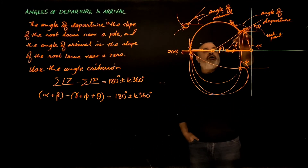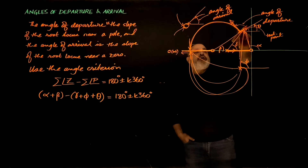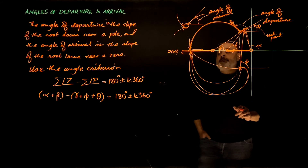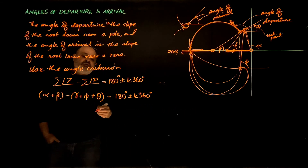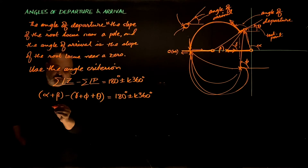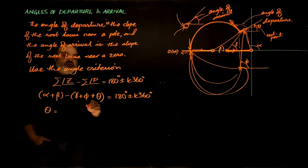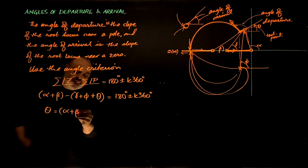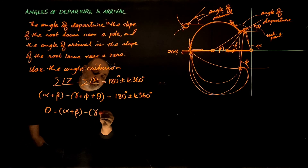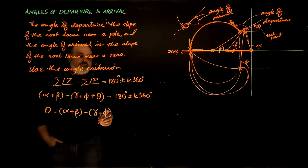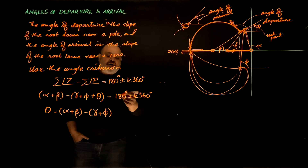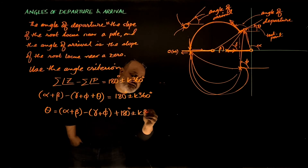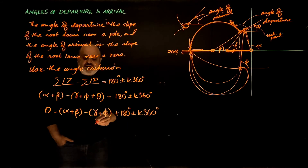Since the test point is very close to the pole, angle theta represents the slope of the root locus — the departure angle. Solving for theta: I take theta to the other side, giving theta equals alpha plus beta minus gamma plus phi plus 180 degrees, plus or minus k times 360.